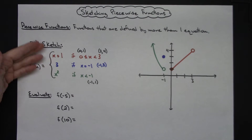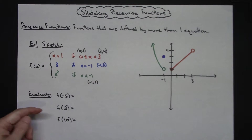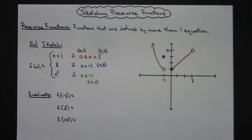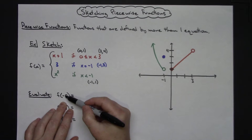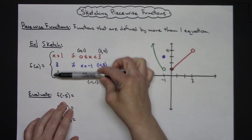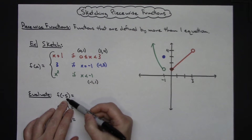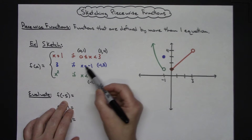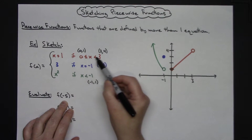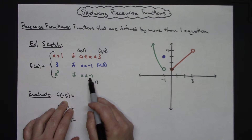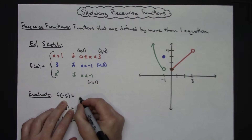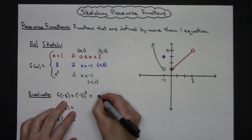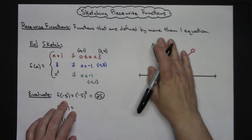Now, totally separate from sketching, a lot of times they will ask you to evaluate a piecewise function. You can evaluate various function values without having the graph at all. For example, f(−5): we need to find where negative 5 fits in the x constraints. The constraint x less than negative 1 applies, since negative 5 is less than negative 1, so we plug it into the x squared piece. Negative 5 squared is 25. You did not need the graph at all.